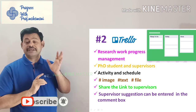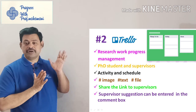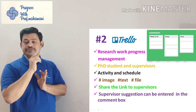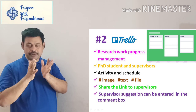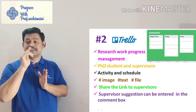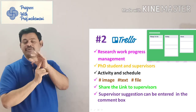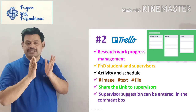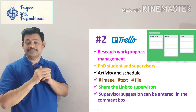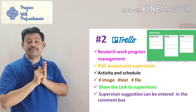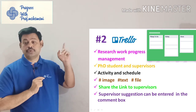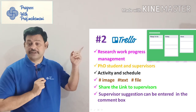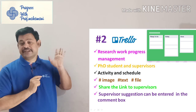The second one is Trello. This is a business management software that I am recommending for research progress management. The reason is that often there is no connection between a PhD supervisor and student except during project or DC meetings — this is a wrong practice. Every activity should be monitored by the supervisor. In Trello, you get a board with three columns: Things To Do, Doing, and Done.